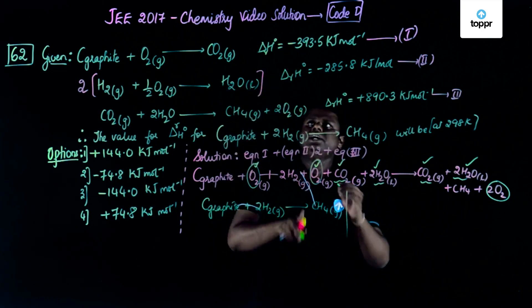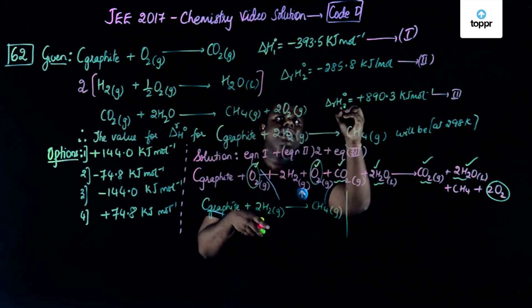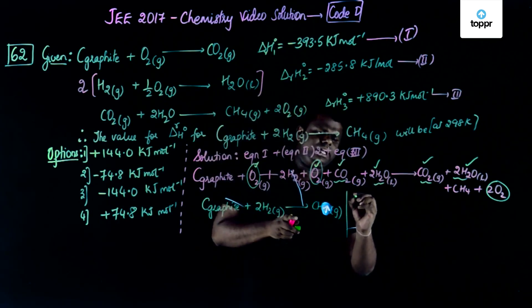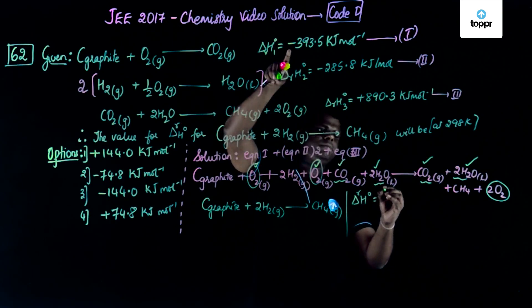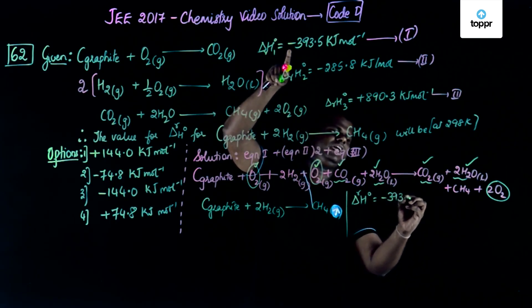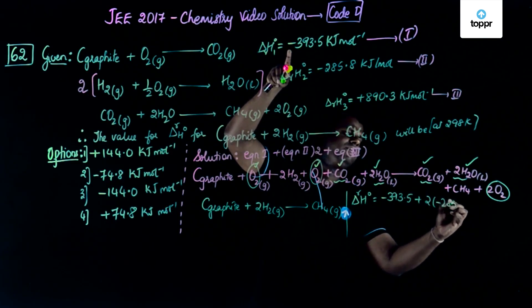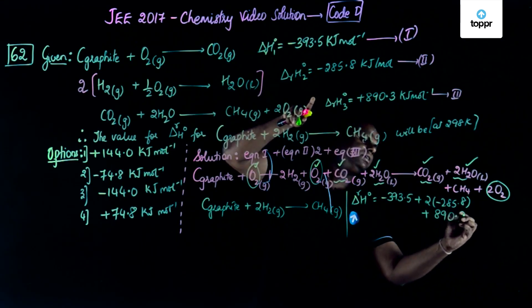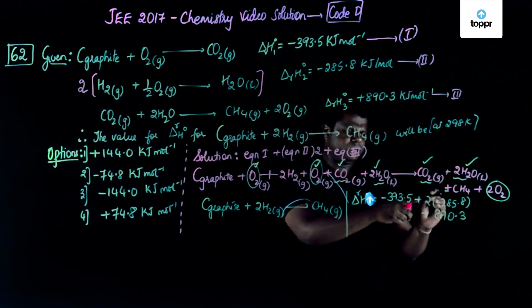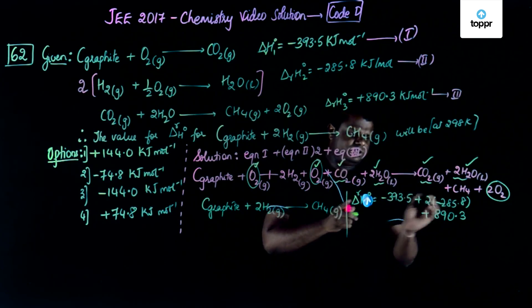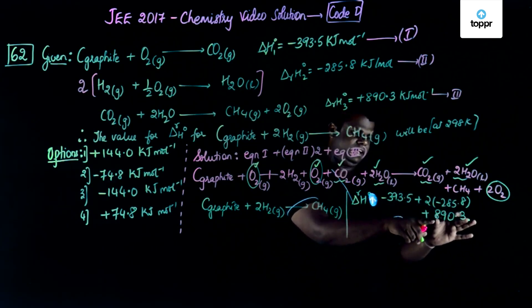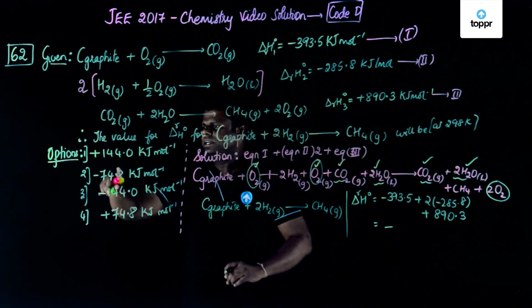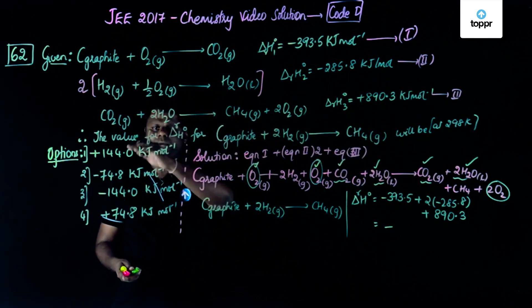Now let's try to add the standard heat of formation. If this is 1, this is 2, this is 3, it's going to be like delta H of the reaction, standard heat of the reaction would be something like negative 393.5 plus 2 times negative 285.8 plus 890.3. If you could see here, when you just multiply this, this becomes like around 575, 580 something like that and this is 393. So this term definitely is going to be greater than 890. So you have a negative greater term and a small term which is positive. So the resultant has to be negative.